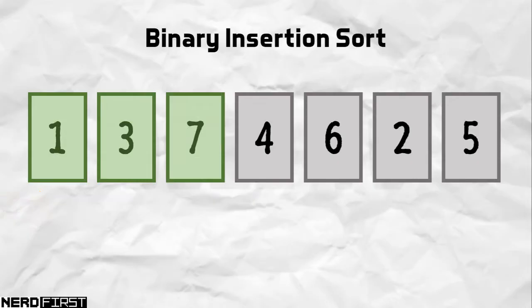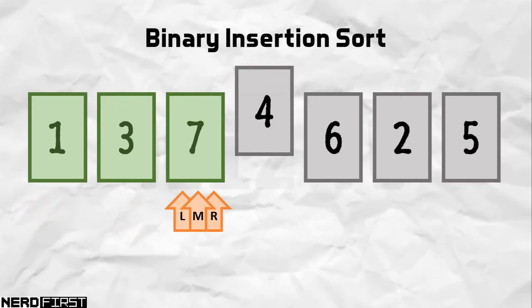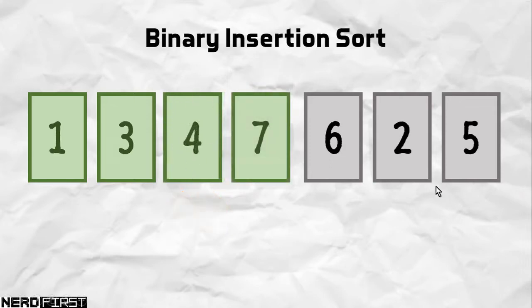So we move on again to the next item. We pick up 4, we do binary search, and that eventually flags out 7 as the so-called selected item. We have to do one more comparison, 4 versus 7. We find that 4 needs to be inserted left of 7, like so.